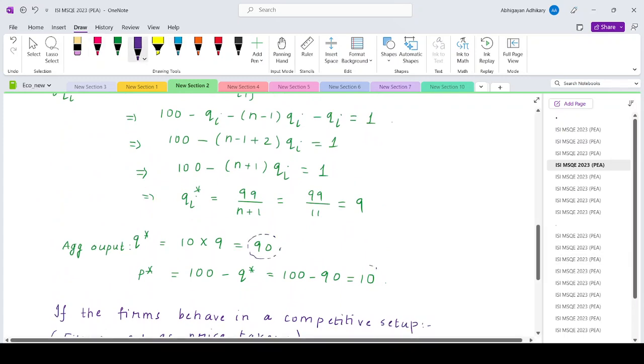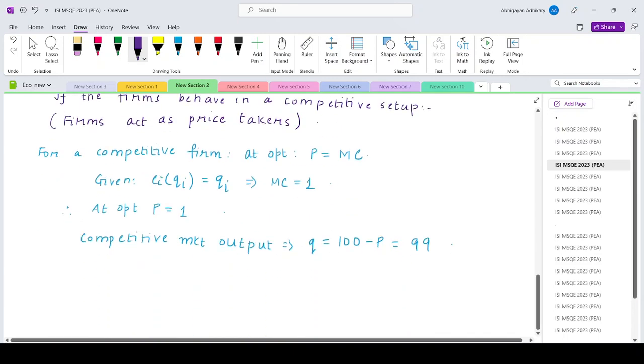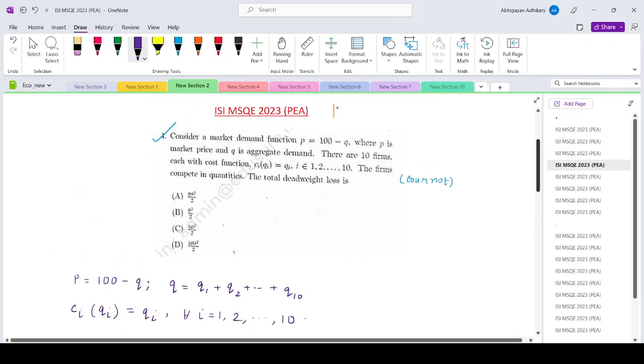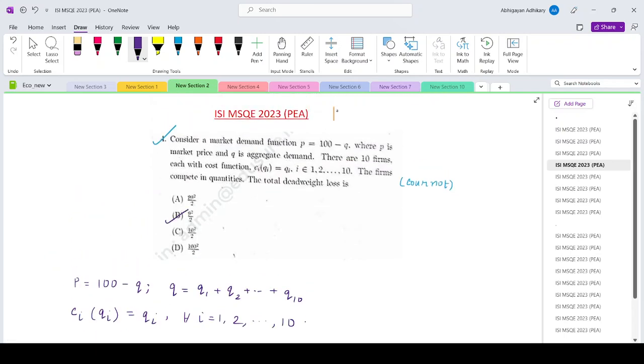The price would be 10, and over here it's 1 and 99. So what would be the deadweight loss? It is half into change in price, which is 10 minus 1, into change in quantity. So that is half into 9 into 9, which is 9 square by 2. If you look at the options, that is basically option number B in this case. So that's your answer for question number 4. Thank you.